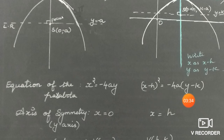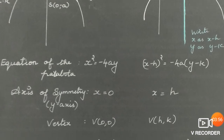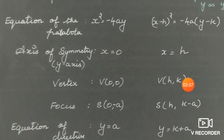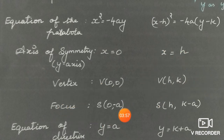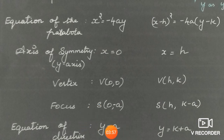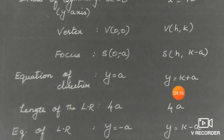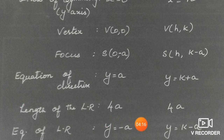The equation becomes: x minus h, whole square, equal to minus 4a times y minus k. The vertex is (h, k). The focus is (h, k minus a). The directrix is y equal to k plus a. The length of the latus rectum is always 4a. The equation of the latus rectum is y equal to k minus a.